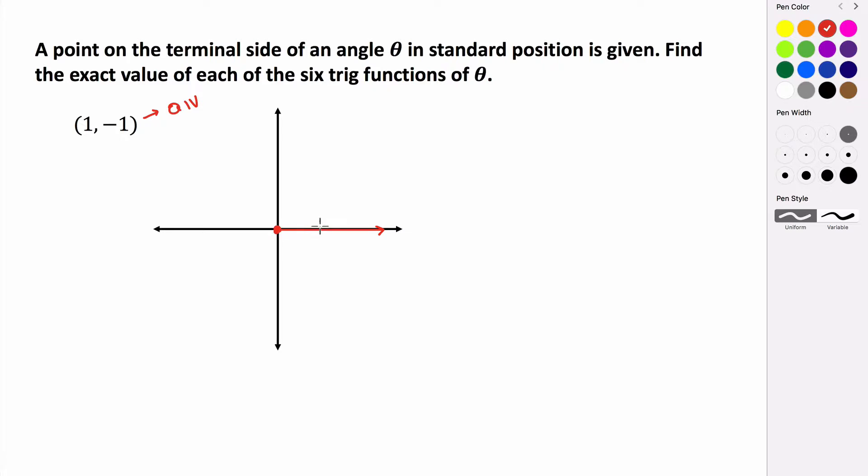So we have out 1, down 1, so our angle is going to be a 45 degree angle. Let's say our point is here. And then we can construct our right triangle. Remember when you're constructing your right triangle, you want to always construct it with the x-axis. So we're going to make our right triangle here.